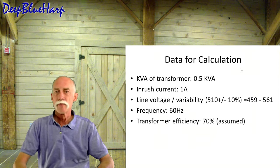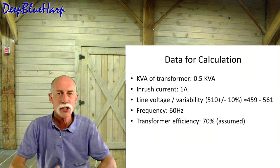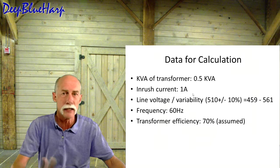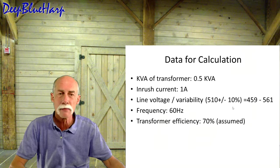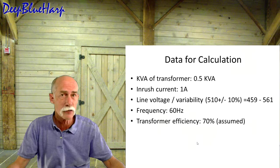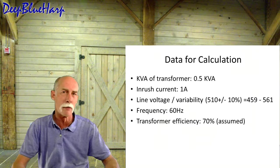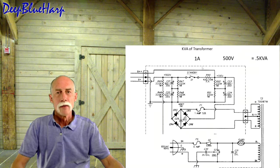There's a couple things we need to know. The KVA transformer, in this case, it's 0.5 KVA. It's 500 volts at 1 amp or 0.5 KVA. Inrush current is set by the fuse that's on the secondary side. It's set at 1 amp. Line voltage variability. Plus or minus 10% of the 510. It gives me a range of 459 to 561. Frequency 60 hertz. And the efficiency of the transformer, I'm going to assume 70%. Unless I have documentation that tells me otherwise, I know it's not going to be 100%. I dare say unless it's a high quality transformer, it's not even going to approach 90. Let's assume it's 70.